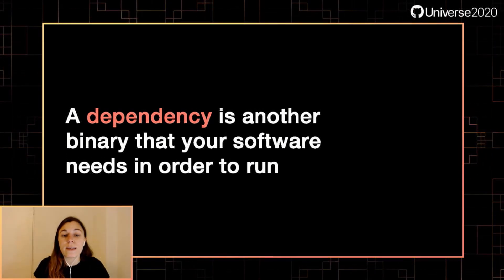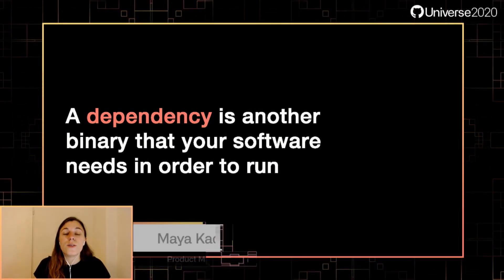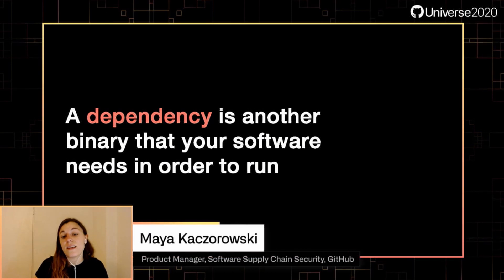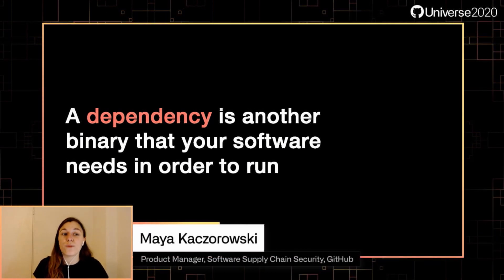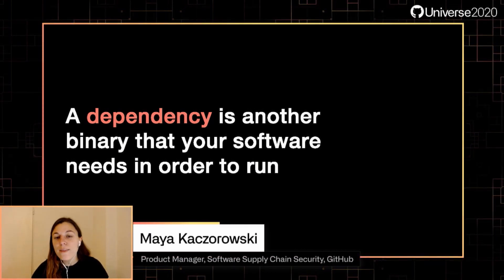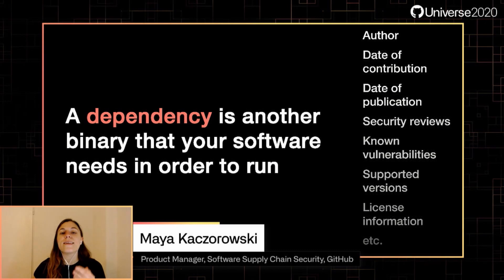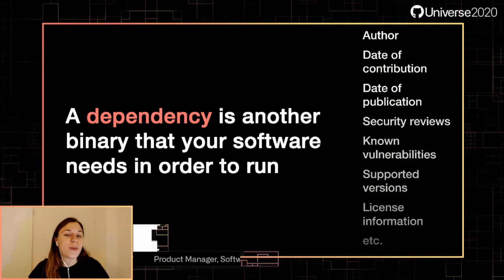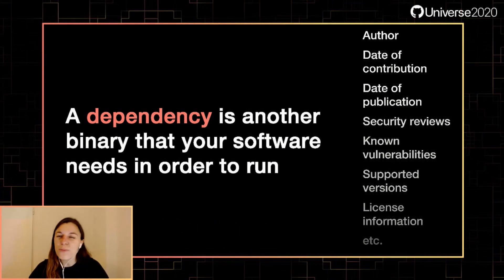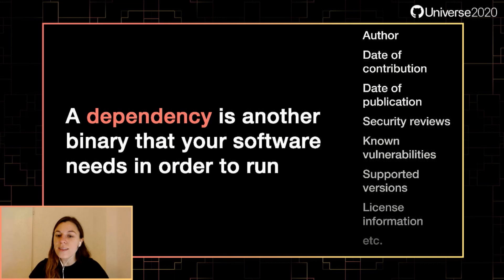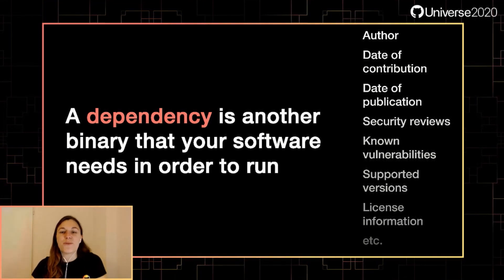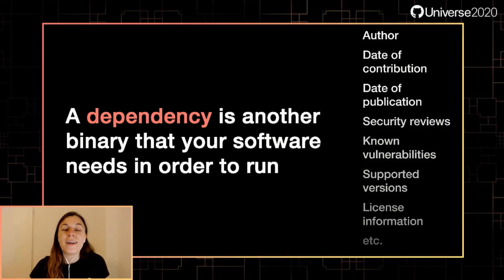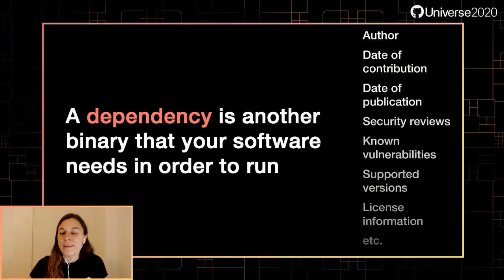Dependencies can also be included transitively. So a dependency of your dependency is also your dependency. The thing is, dependencies can be risky. They're not code that you wrote. You don't really know what's in them — kind of like you don't really know what's in that 2 a.m. shawarma from the place around the corner. It seems fine, but you never know.